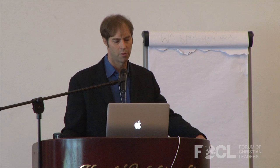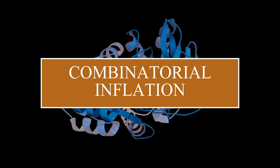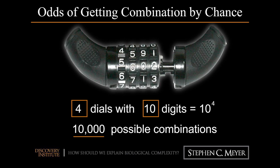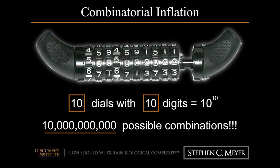I was aware there was an impasse in the field, but I wanted to know how deep that impasse was — why was this information problem so difficult? Two problems came to my attention. The first was called the problem of combinatorial inflation. If you look at a bike lock with four dials and ten digits each, you might think there are 40 possible combinations, but it's actually ten times ten times ten times ten — ten thousand. The number of combinations increases exponentially with the number of dials.